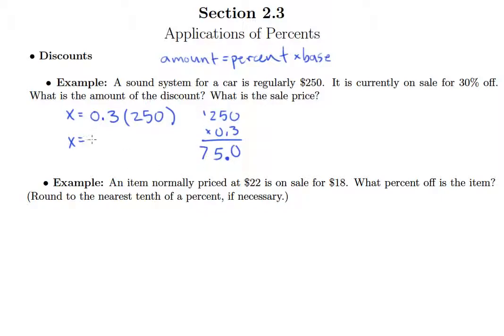We've got to move that decimal over one. So X is $75. But understand that this told me the amount of the discount. So the discount is $75. Now the sale price is just found by taking the discount away from the original price. So the sale price is 250 minus 75, which gives us $175.